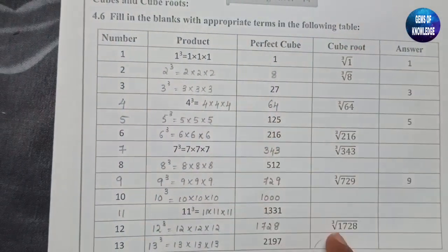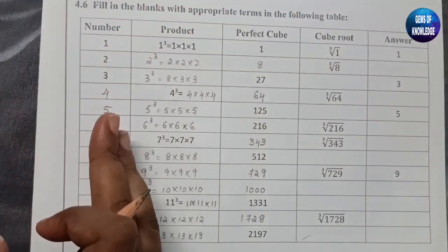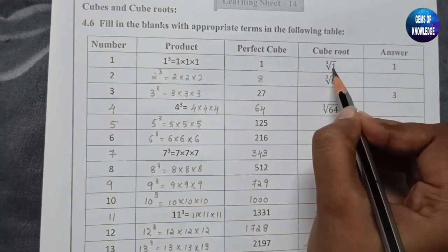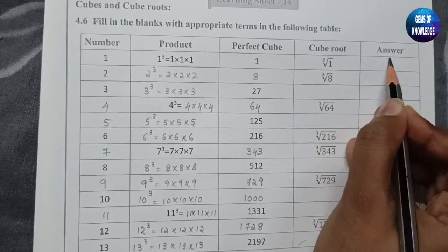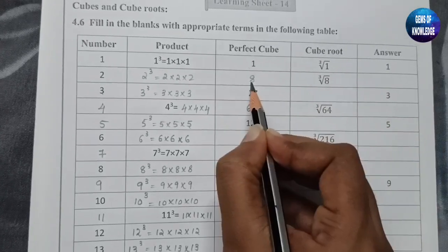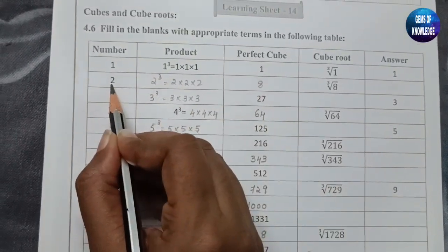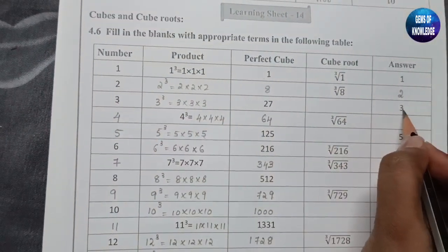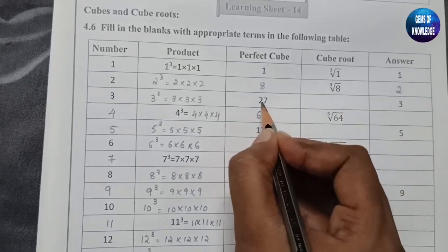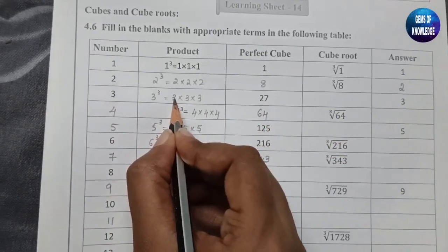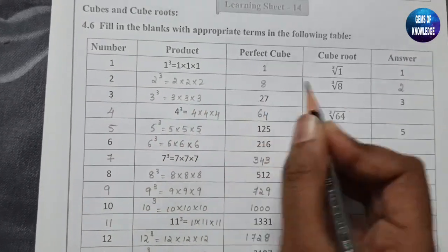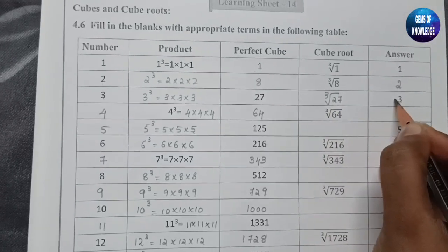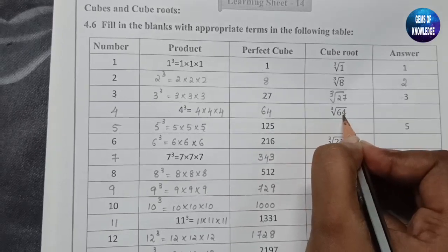For these numbers we reverse them in the form of roots and we get the original numbers. Cube root of 1 equals 1. Cube root of 8 is 2. Three cube is 27, so cube root of 27 is 3.